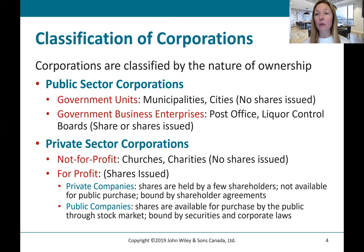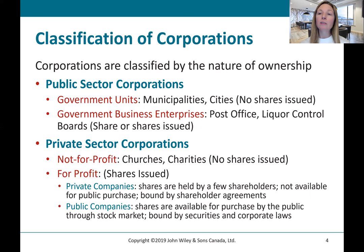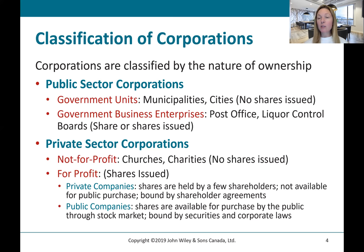Corporations are classified by the nature of their ownership. There are corporations for cities or municipalities that may not have shares issued. Government business enterprises like Canada Post or the Liquor Control Board may have shares issued and those are privately controlled. Private sector corporations include not-for-profits, churches, and charities, which will not have shares issued. For-profit corporations normally have shares issued, but a private company's shares are governed by a shareholder agreement and are not easily transferable or liquidated.